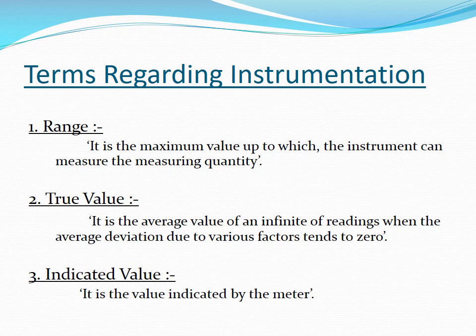Range is the maximum value up to which the instrument can measure. For example, an ammeter can measure current from 0 to 100 amperes — that is its range; above 100 amperes it cannot measure. One more term is also included here, and that is span. Span is the gap between the minimum value and maximum value that the instrument can measure. For example, if an ammeter can measure 0 to 100 amperes, the span is 0 to 100 amperes. So range is the maximum value the instrument can measure.